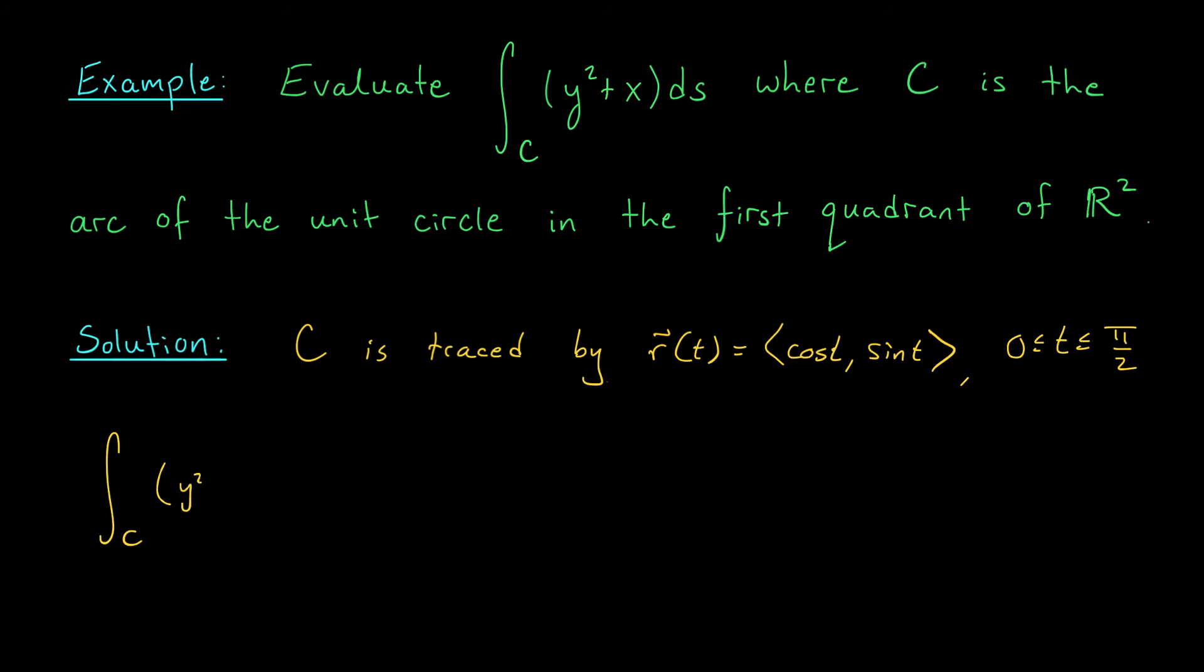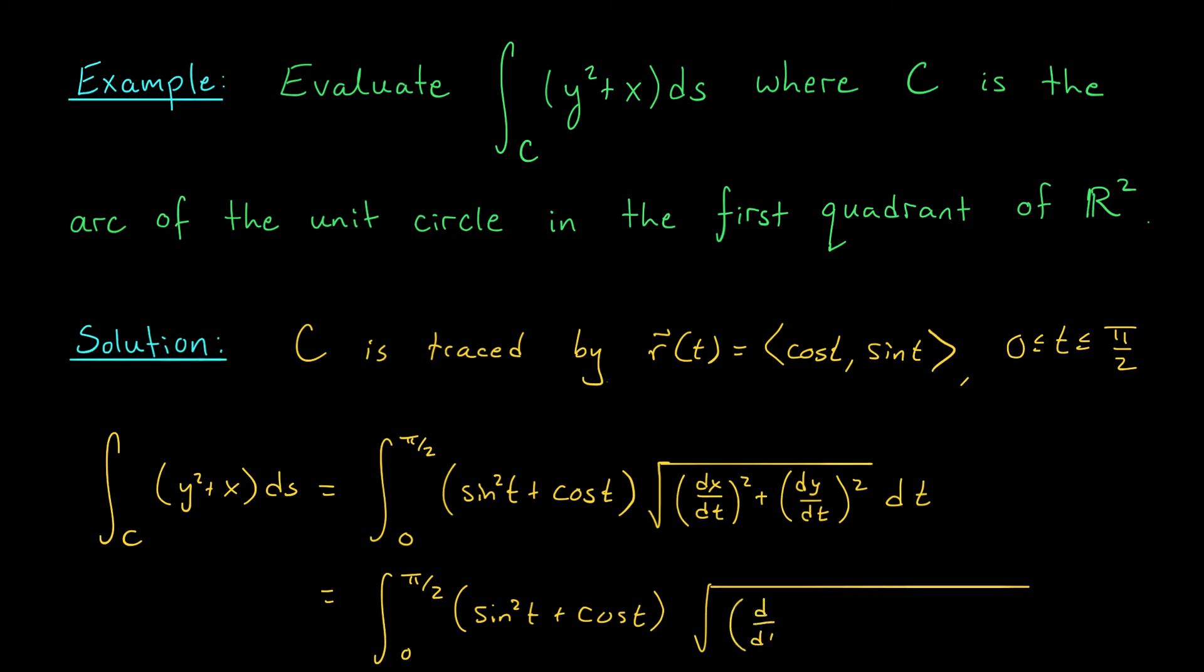We've parametrized our curve, and now we just apply the formula from the last slide. The integral over C of y^2 + x ds is going to be the integral from t = 0 to t = π/2. And now we're going to replace our x and y with these expressions involving t. y^2 is going to become sin^2(t). x is going to become cos(t). And what about this ds term? Well, ds is going to be replaced by that square root, the square root of (dx/dt)^2 + (dy/dt)^2 dt. Of course, we do know what x and y are. x is cos(t), y is sin(t). So we get the integral from 0 to π/2 of (sin^2(t) + cos(t)) times the square root of (d/dt cos(t))^2 + (d/dt sin(t))^2 dt.